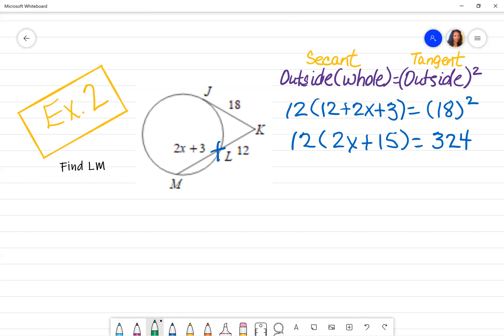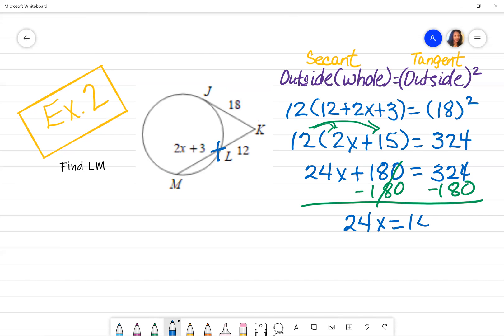Now, when I distribute this 12 that's on the outside to everything that's inside of the parentheses, I am left with 24X is equal to 12 times 15, which is not equal. Sorry, that's a plus sign there. 24X plus 180, which is 12 times 15, is equal to 324. I am going to subtract 180 on both sides because I'm trying to get X by itself. And I end up with 24X is equal to 324 minus 180 is 144.